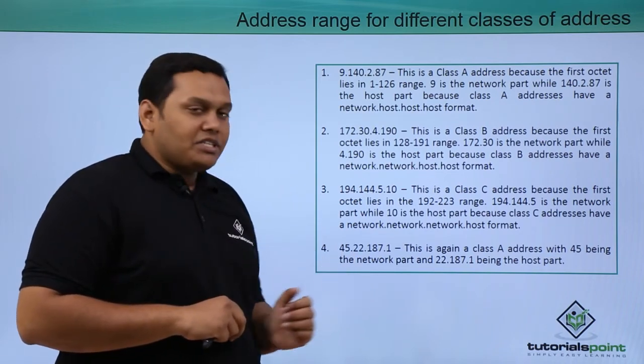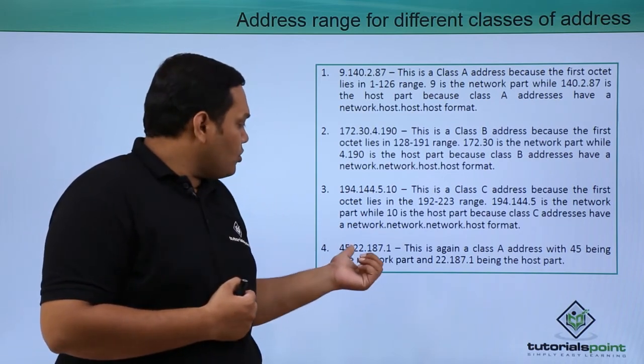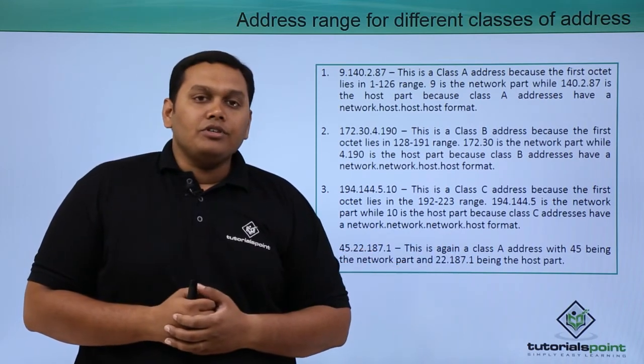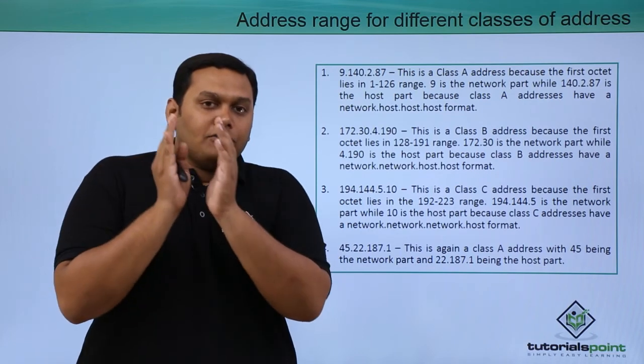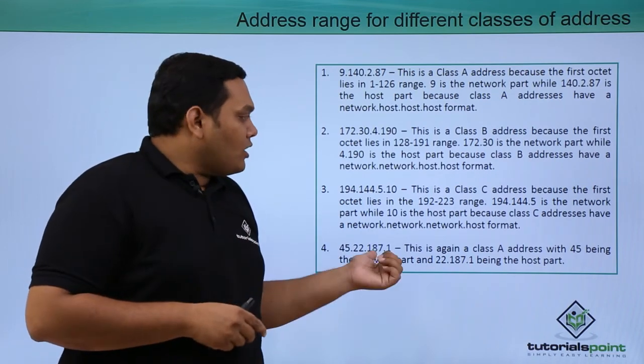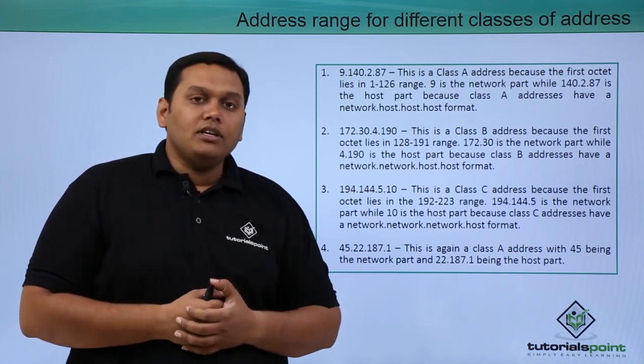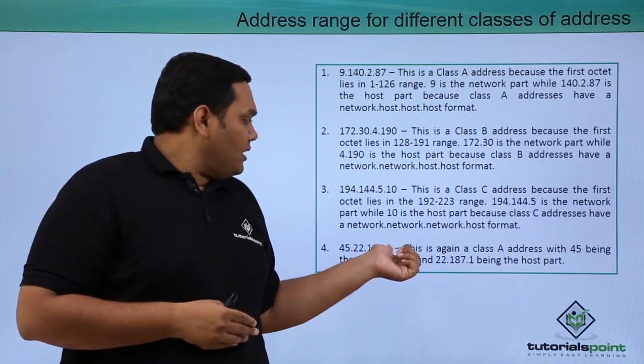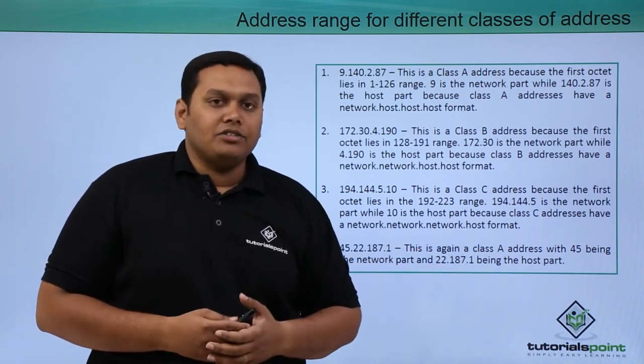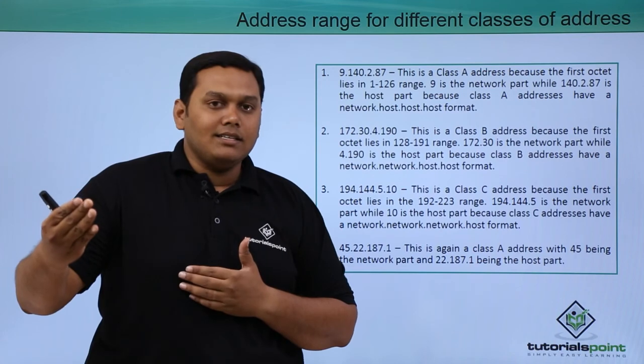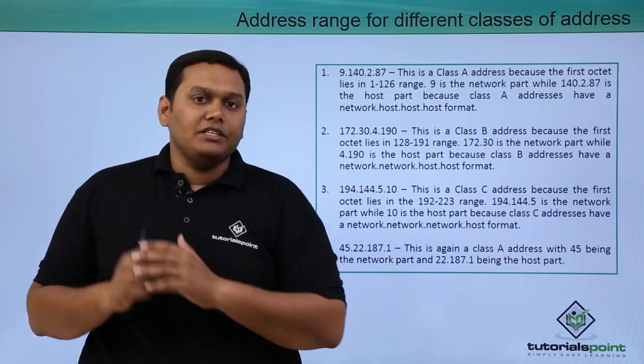Again, you can see another example: 45.22.187.1, which comes under class A because the range of the first octet falls under 1 to 126. So 45 comes under this range. This is the format we use to identify the classes, and these are the first octet ranges.